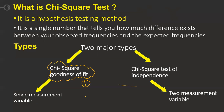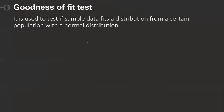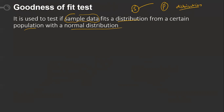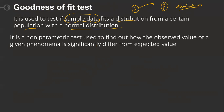The goodness of fit test is used to test if sample data from a population fits a particular distribution — for example, a normal distribution. We will study three types of distributions in a later video. It is a non-parametric test used to determine how the observed values of a given phenomenon differ from expected values.